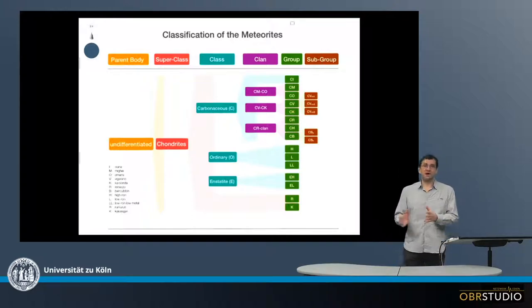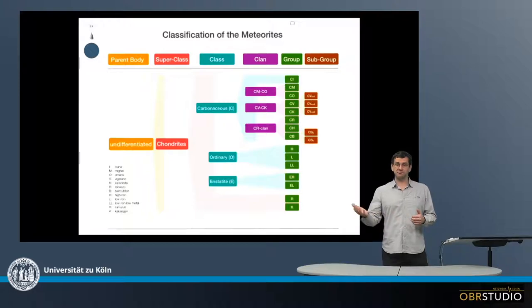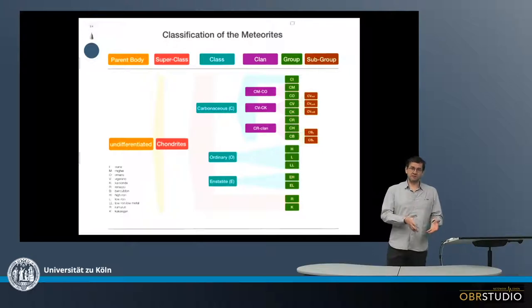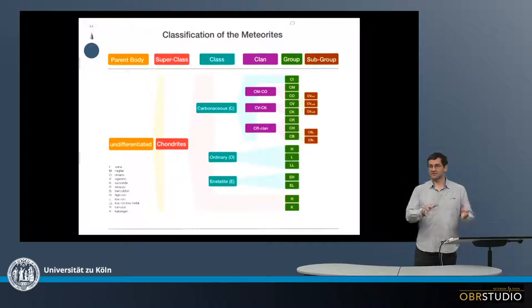Maybe the parent body from which these meteorites originate were differentiated, and there was an iron core. The iron core, of course, does not have any silicate rocks, so then this meteorite would not have any of these components.